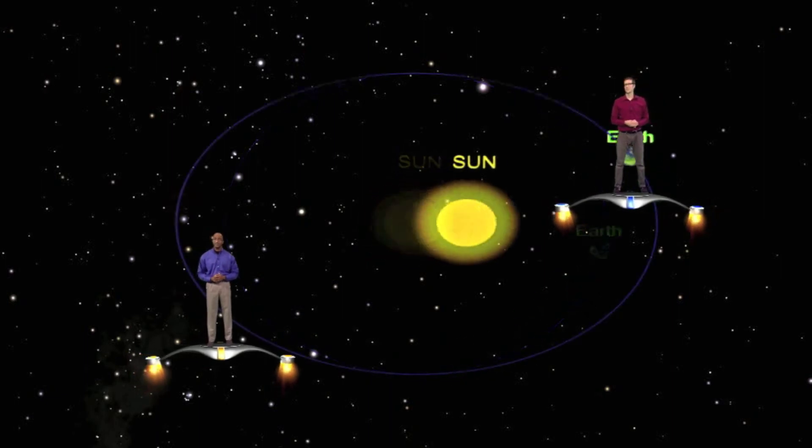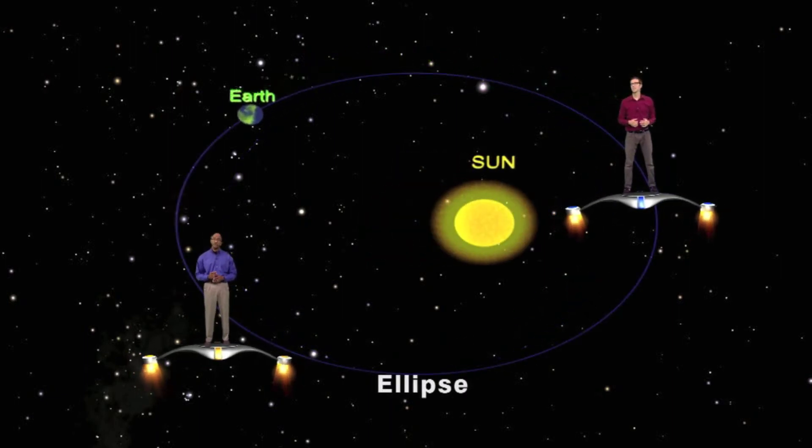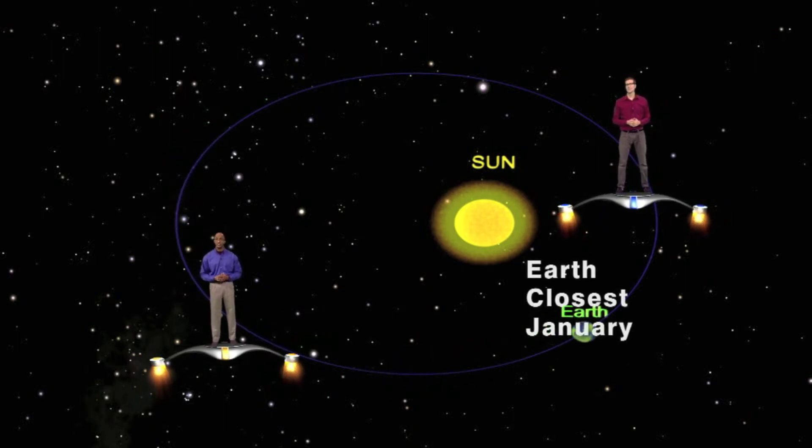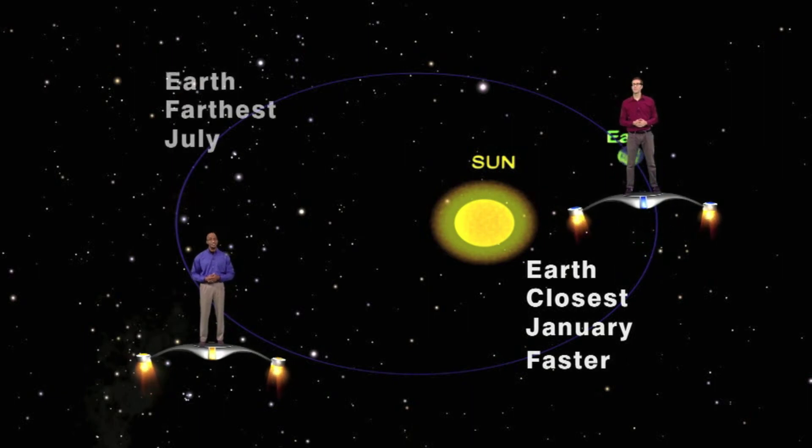You see, our Earth's orbit is not a perfect circle, but is actually an ellipse. So our Earth varies its distance from the Sun during the year. When it's closer to the Sun, it travels faster, and when it's farther away, it travels slower.